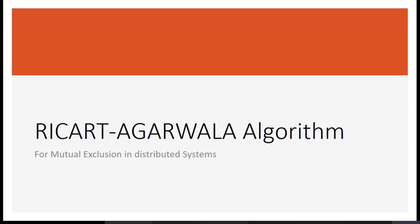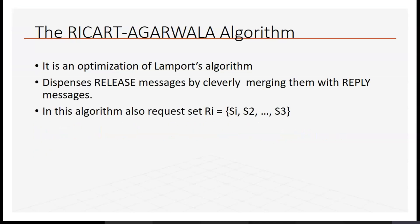The Ricart-Agrawala algorithm is an optimization of Lamport's algorithm. It dispenses the release message by cleverly merging it with the reply message. In this algorithm, there is a request set Ri which contains requests from all the different sites.